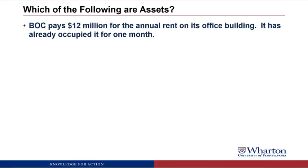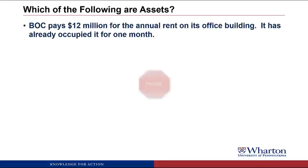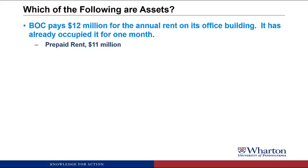BOC pays $12 million for the annual rent on its office building and has already occupied it for one month. This is an asset because in a market transaction we paid for the right to occupy space in the office building — we're going to call that asset prepaid rent. The value of the benefits is $11 million, not $12 million. Even though we've paid $12 million, we've used up one month, so there are 11 months of future space we're entitled to, valued at $11 million.